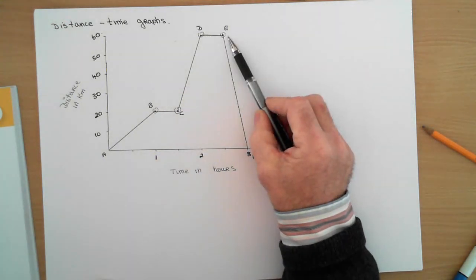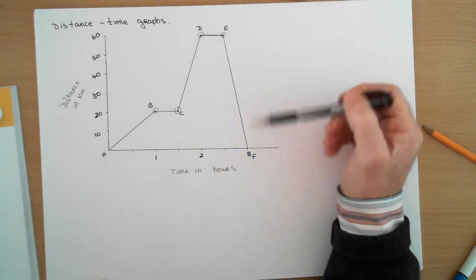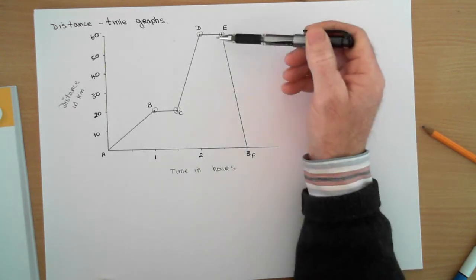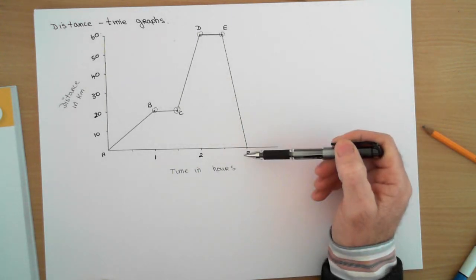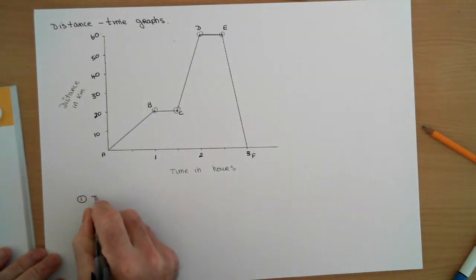And from E to F, in that half hour they went how many kilometers? 60 kilometers. Do you understand that one?